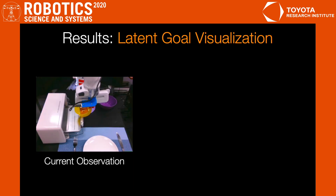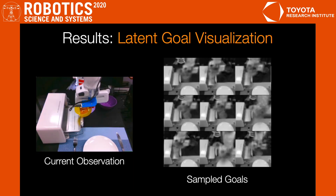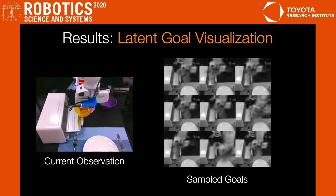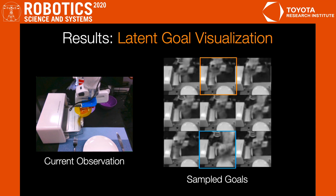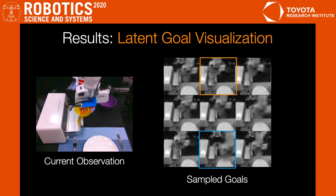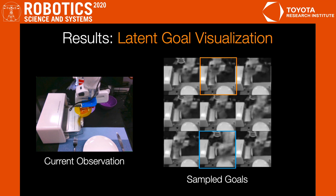Here we show the multimodal sub-goals captured by our planner at the task intersection. Each picture corresponds to a mode in the GMM prior. This shows that our model captures both spatial-temporal variations and cross-task variations.